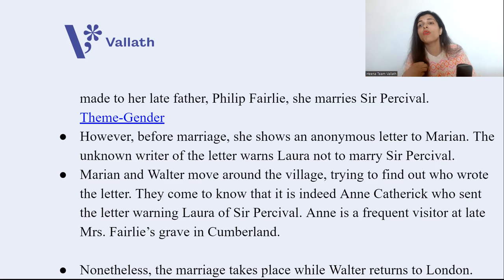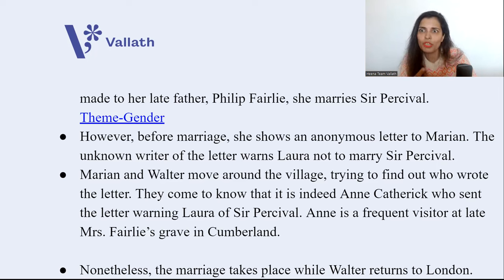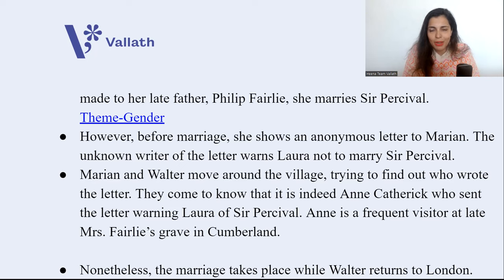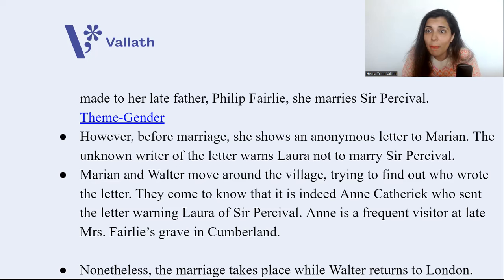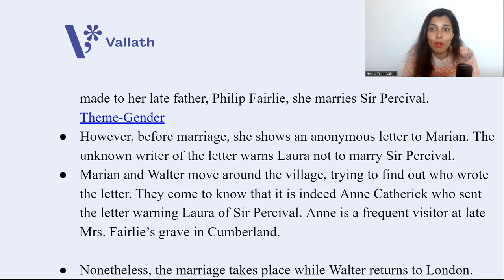Laura is sad because she loves Walter Hartwright, but she had made a promise to her father at his deathbed to marry the rich baronet, Sir Percival. The theme here is gender — how a woman was forced to marry. Before the marriage, Laura shows an anonymous letter to Marianne warning her not to marry Sir Percival. Like detectives, Marianne and Walter move around the village trying to find out who wrote this letter. Finally, Walter finds out it is the woman in white — Anne Catherick — who has come to Cumberland, keeps visiting Mrs. Fairley's grave, and has written this anonymous letter to Laura telling her not to marry Sir Percival.